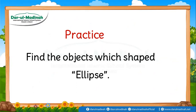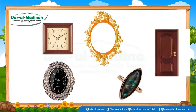Okay, let's practice again. प्यारे बच्चों, क्या आप ellipse शकल की चीजों को तलाश कर सकते हैं? आइए देखते हैं, इन मेंसे ellipse शकल की चीज़े कौन-कौन सी हैं? Is this clock an ellipse? No. Is this mirror an ellipse? Yes. Is this door an ellipse? No. Good. Is this clock an ellipse? Yes, its shape is ellipse. Is the stone in this ring an ellipse? Yes. Good.